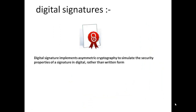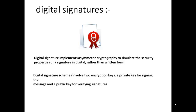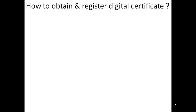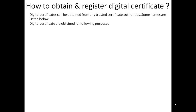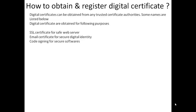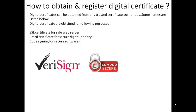An important aspect is the digital signature, which is the cryptographic signature of the sender instead of a written signature. It involves two keys: the private key is used for signing and the public key is used for signature verification. You can obtain a digital certificate from any trusted certificate authority according to your purpose — such as an SSL certificate for a safe web server, an email certificate for secure digital identity, and a code signing certificate for secure software. Trusted certificate authorities include VeriSign, Comodo Security, GlobalSign, and Entrust.